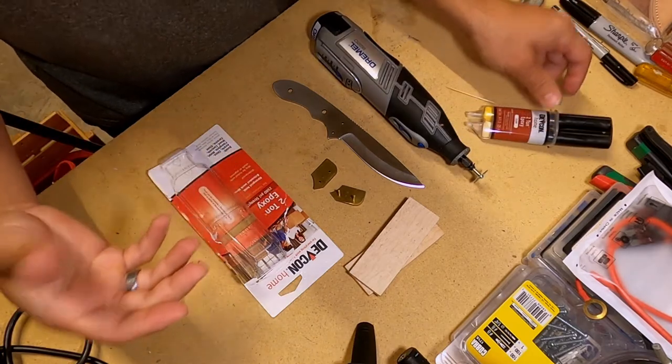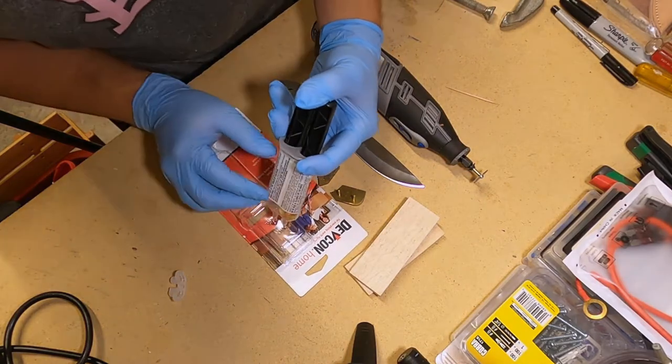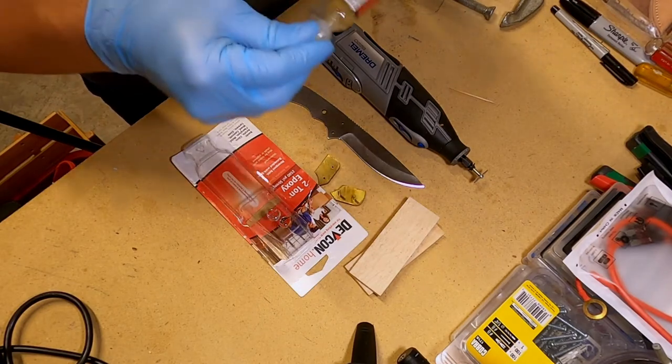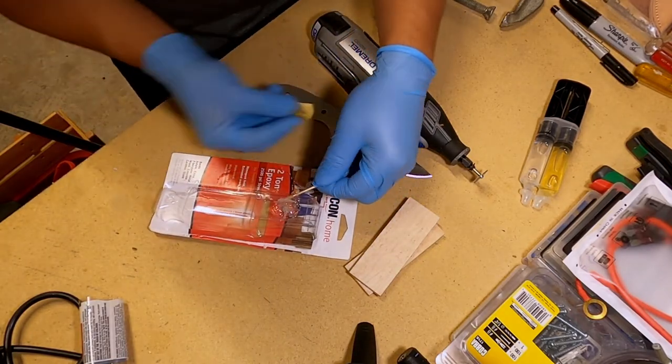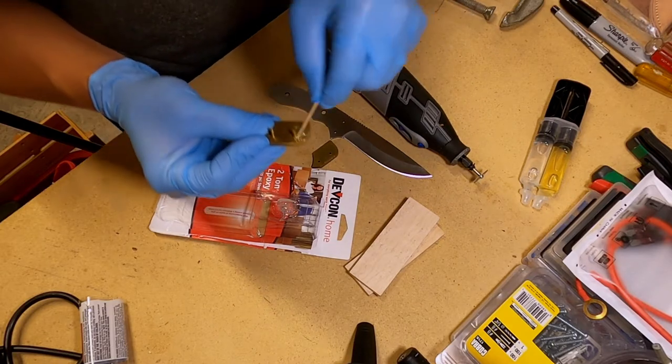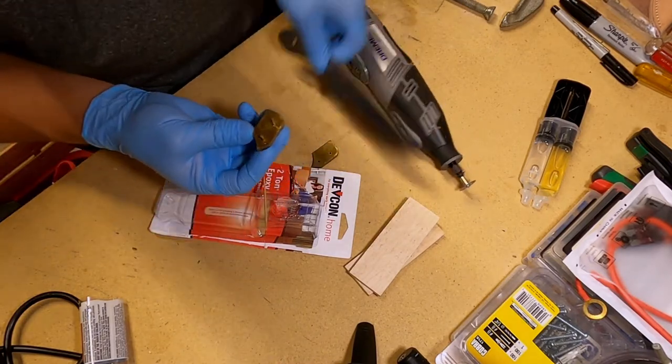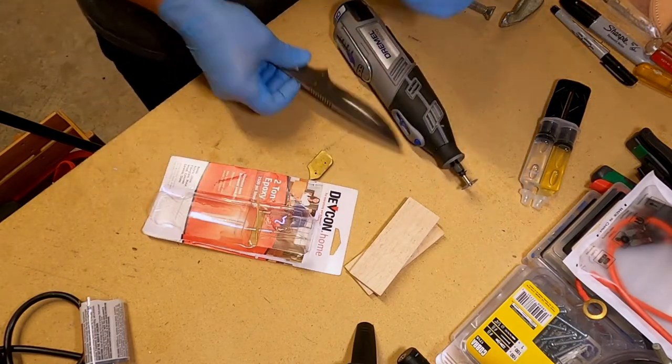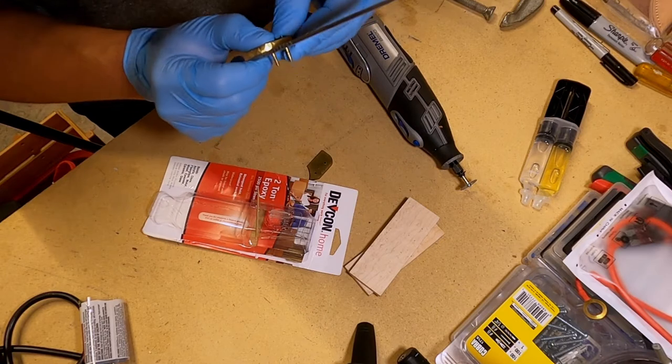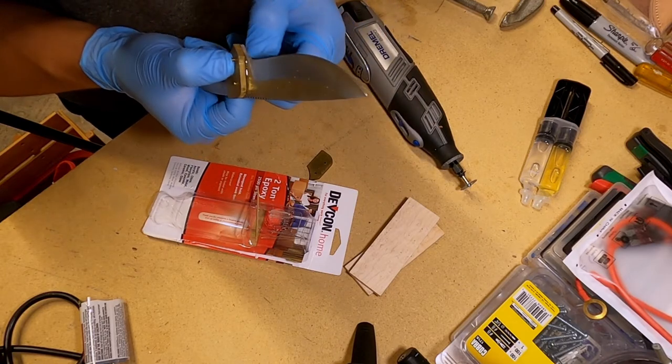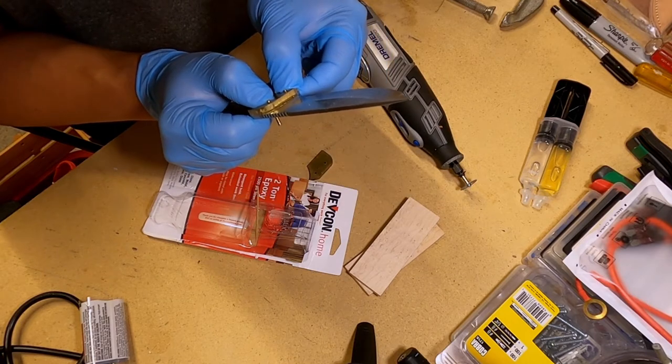I'm also going to put on a pair of gloves. We're going to apply a little bit of this in here. I'm going to apply it directly onto the bolster like this, then take this bolster and place it in like that. We're going to get these pins fairly close to this side and sand those down when we finalize the knife.